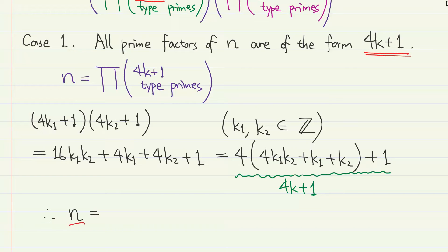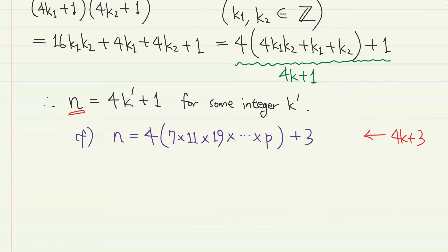Therefore n, which is the product of a bunch of prime numbers all of the form 4k plus 1, also is an integer of the form 4k plus 1. But this directly contradicts the fact that n is an integer of the form 4k plus 3, which was established by our very definition of n. This means that not all of the prime factors of n are of the form 4k plus 1, which leads to the other case.